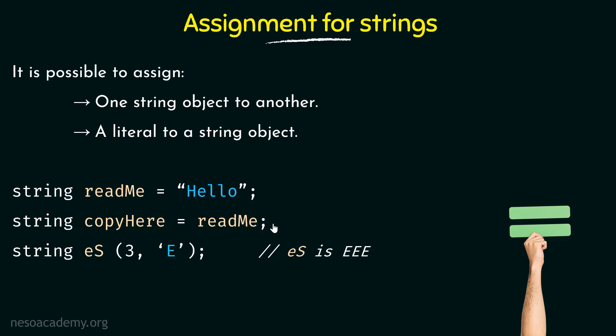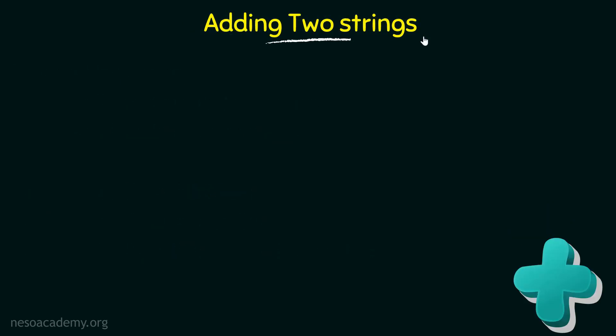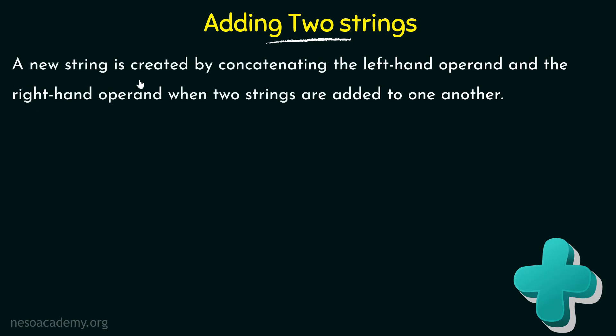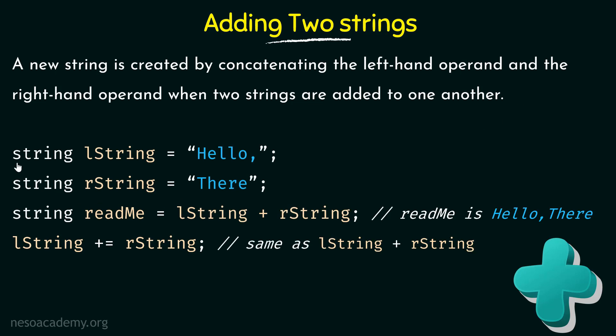Now let's move on to the next operation. Here we have another very important operation: adding two strings. A new string is created by concatenating the left hand operand and the right hand operand when two strings are added to one another. Whenever we talk about adding two strings, we are actually concatenating the left hand string with the right hand string. Let's take some examples. We have a string called lstring which is assigned the literal value hello comma,